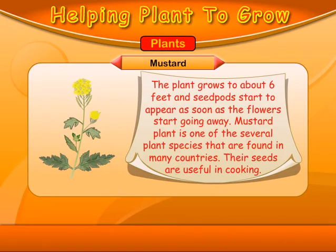Mustard. The plant grows to about 6 feet and seeds would start to appear as soon as the flowers start going away. Mustard plant is one of several plant species found in many countries. Their seeds are useful in cooking.